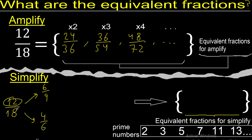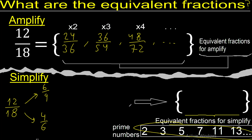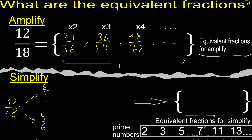12 and 18 cannot be divided by another number. Here, 6 and 9 — can they be divided by 2? No. By 3? Yes. 6 divided by 3 is 2. 9 divided by 3 is 3.